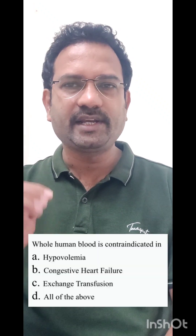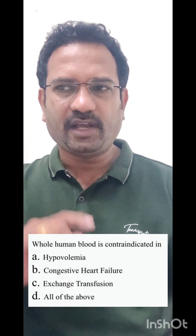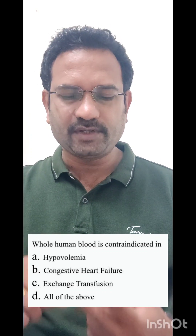Hello everyone, welcome to the video on question and answer explanation for the topic blood products. Let us see the questions one by one. The first question is: whole human blood is contraindicated in — options are hypovolemia, congestive heart failure, exchange transfusion, or all of the above.